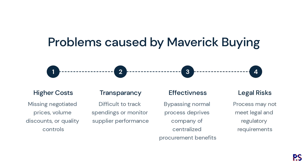Finally, maverick buying can create legal and compliance risks for the company. Purchases made outside of the normal process may not be subject to the same legal and regulatory requirements as purchases made through approved suppliers, which can expose the company to potential liability. Overall, maverick buying is a problem because it can lead to higher costs, lower quality goods or services, a lack of transparency and accountability, and legal and compliance risks. Let's look at how we can use our process mining solution to identify the key drivers of maverick buying.